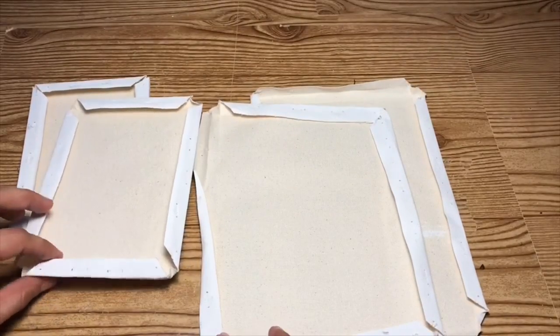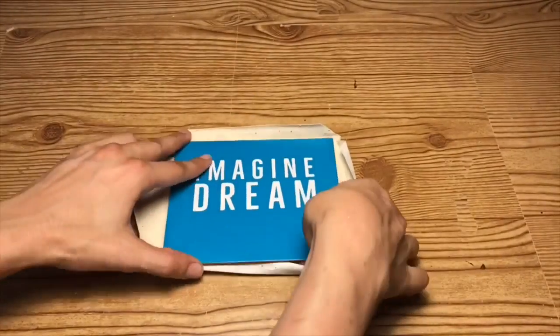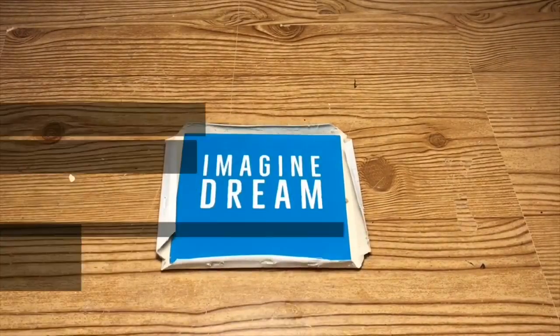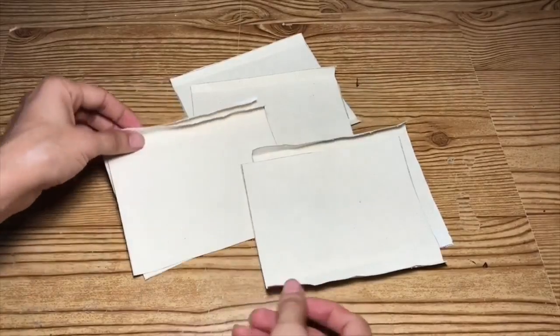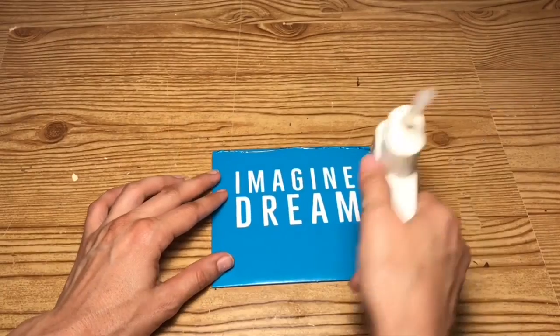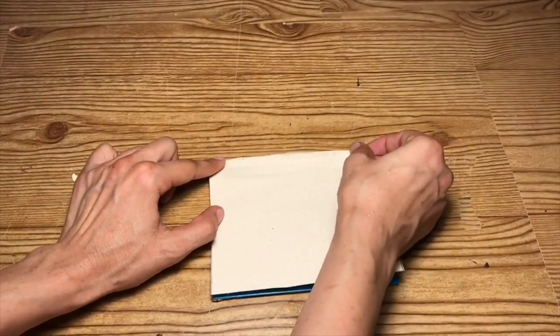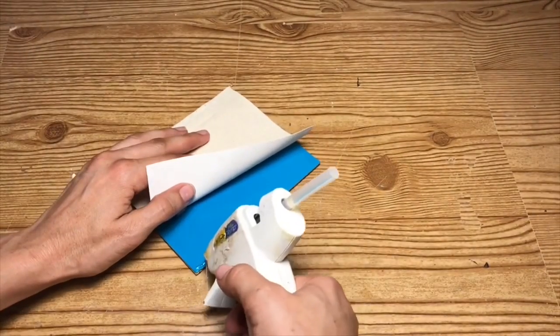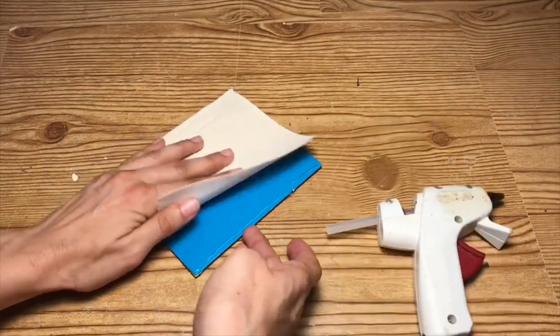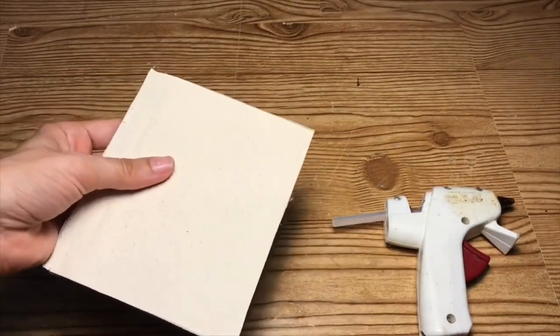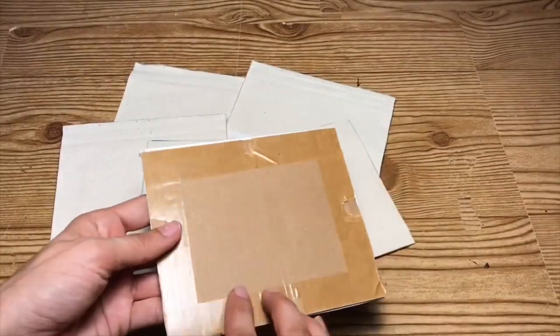Next, I'm going to take these canvases that were left over from a previous project, and I'm just going to take the back of the frame and cut the canvases to fit. Now, taking hot glue, I'm going to glue the canvases onto each of the backings. This is what they should look like once you have them all completed.